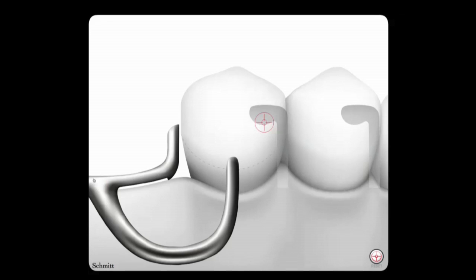This video illustrates how an RPI direct retainer can theoretically reduce stress on an abutment by reducing rotation and disengaging the retentive arm from the abutment during function.